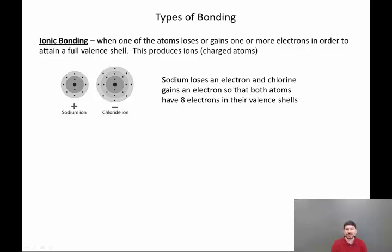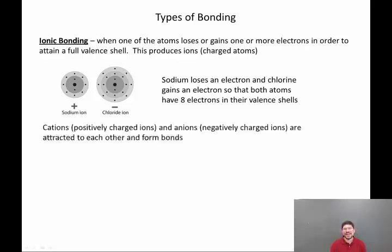The classic example of ionic bonding is sodium chloride. Sodium loses an electron, it's in group one, it loses that one electron in its outermost shell. Chlorine gains an electron, and as you can see in the diagram, both atoms, once they form ions, have eight electrons in their valence shells. Cations of course are positively charged, anions are negatively charged. We know that opposite charges attract, so they are simply attracted to each other to form bonds.